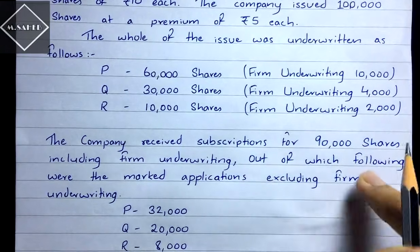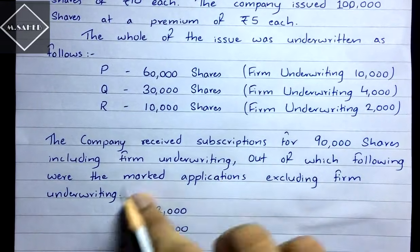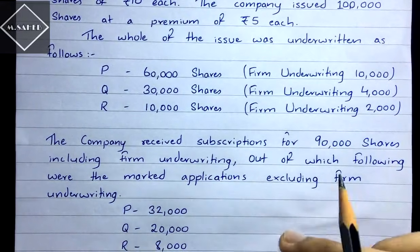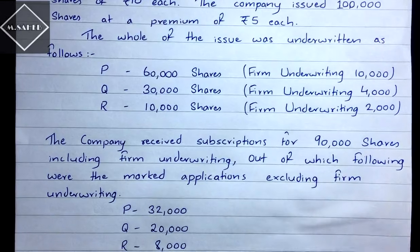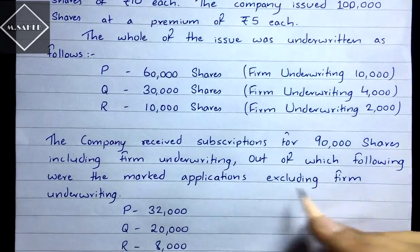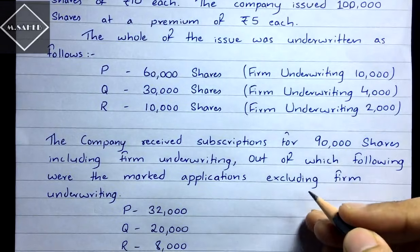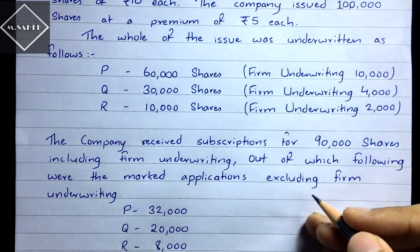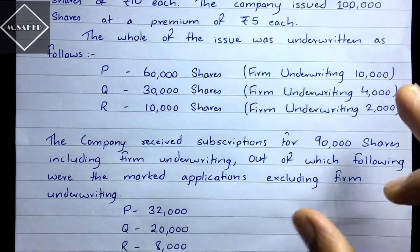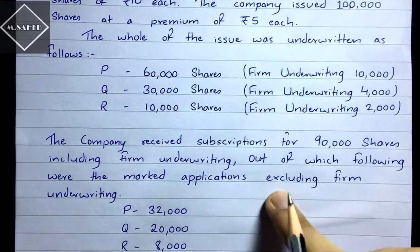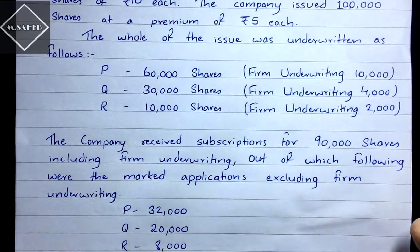The company received subscriptions for 90,000 shares including firm underwriting. Out of these, the marked applications are given as follows, but note they are excluding firm underwriting. In the previous problem it was including firm underwriting and we had to split it, but here they are excluding firm underwriting, so these are the actual marked applications.